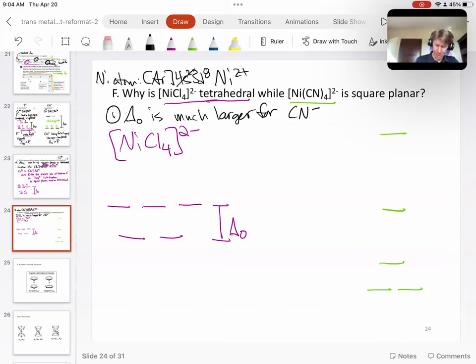We're going to be argon 4S2, 3D8. Take away the 4S2. The nickel two plus ion will be argon 3D8. That's something that we know and can always do for this.